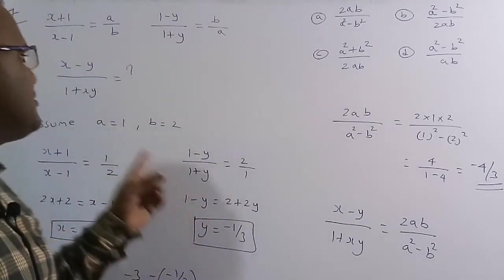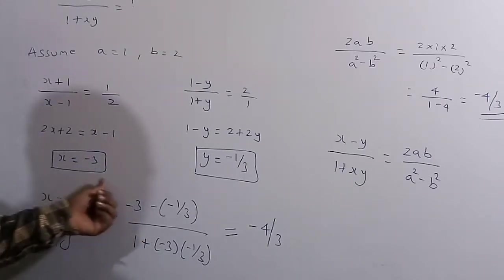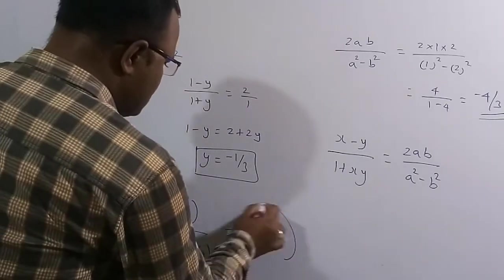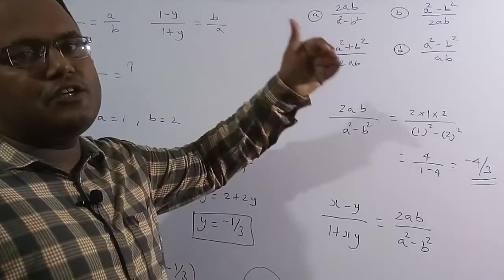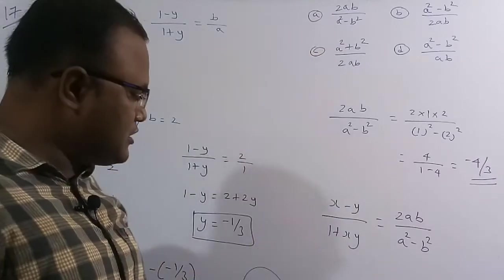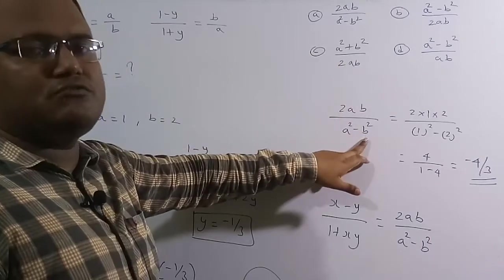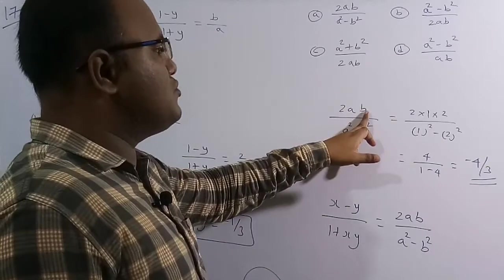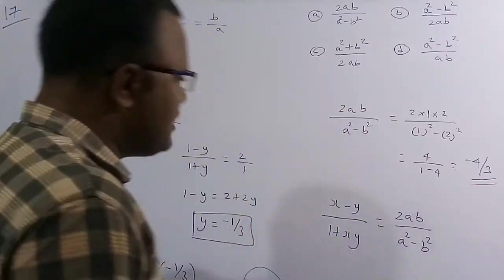Substituting x = −3 and y = −1/3 into (x−y)/(1+xy): the result is −4/3. Now checking option A: 2ab/(a²−b²) with a = 1, b = 2 gives 2(1)(2)/(1−4) = 4/(−3) = −4/3. This matches.